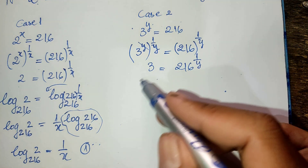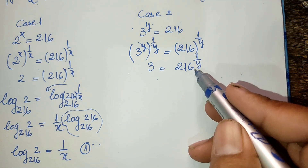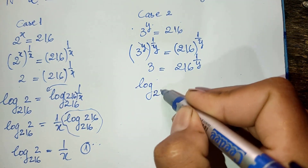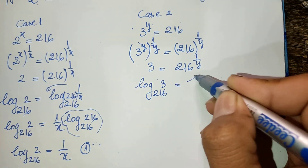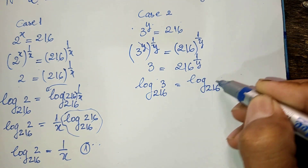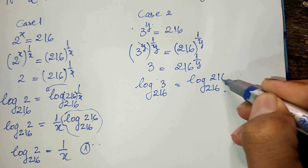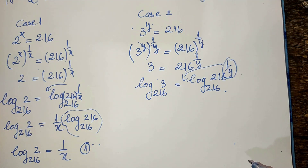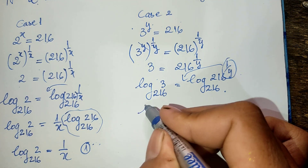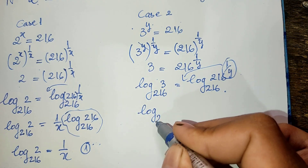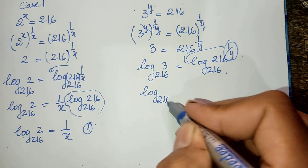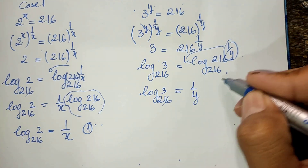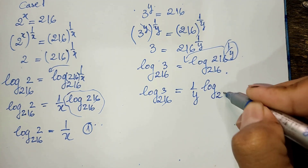Now I apply log base 216 to both sides of this equation. I get log base 216 of 3 equals log base 216 of 216 raised to power 1 divided by y. I bring the exponent to the front of the log, so I get log base 216 of 3 equals 1 divided by y times log base 216 of 216, which gives us log base 216 of 3 equals 1 divided by y.